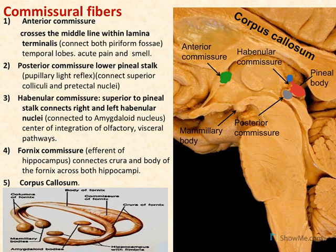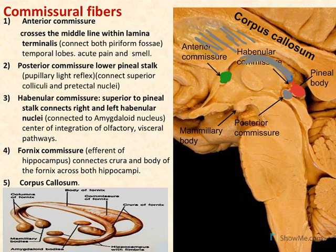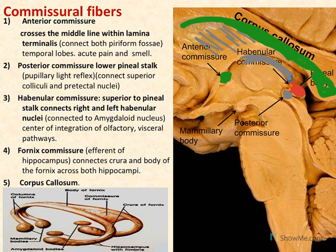Another commissure very important in the limbic system is the fornix. The fornix is located under the corpus callosum and separated from it by the septum pellucidum. The fornix is the largest commissural fibers of the brain. Behind the septum, we find a cavity called the lateral ventricle inside the brain.